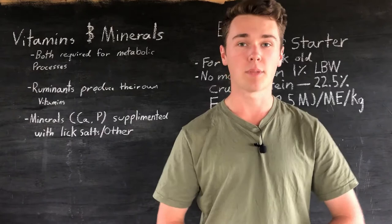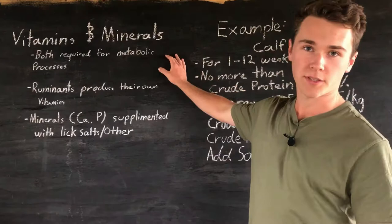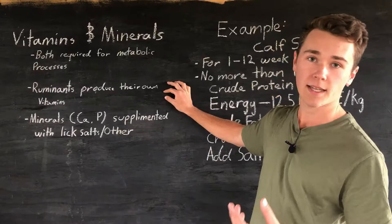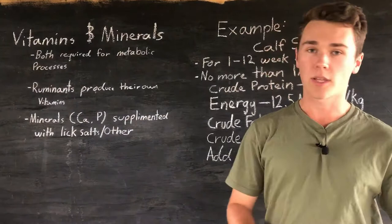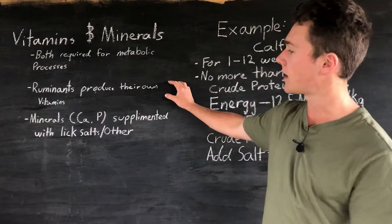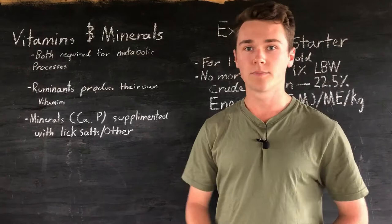Vitamins and minerals are needed in the diets of our animals, mainly for metabolic processes. Ruminants have another advantage: they can produce their own vitamins — mainly vitamin B and K — again through their symbiotic relationship with microbes. Monogastrics need to be supplied with all the vitamins they need. Minerals such as calcium and phosphorus need to be supplied to both, and can be supplemented in feed, given as a lick salt, or added as a vitamin-mineral premix.